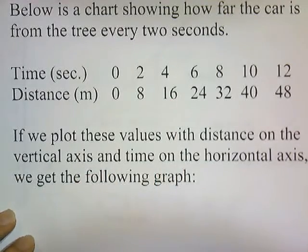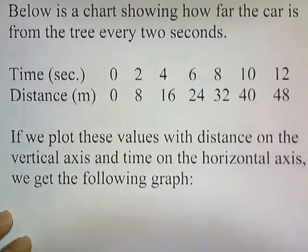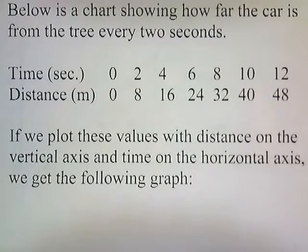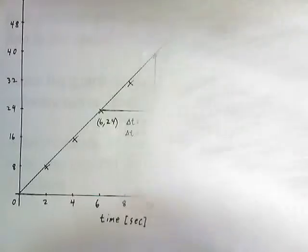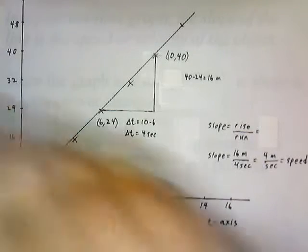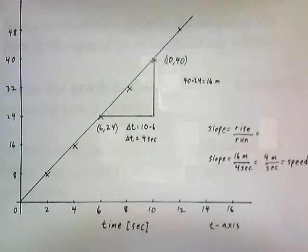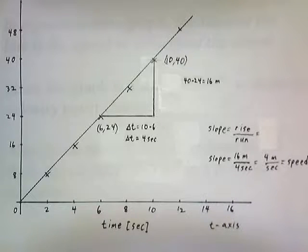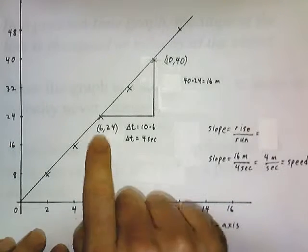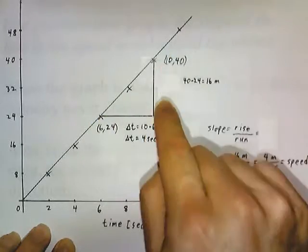If we plot these values with distance on the vertical axis and time on the horizontal axis, we get the following graph. Now this graph is a straight line. If we pick two points on the line, we can calculate the slope. I picked points (6, 24) and (10, 40).